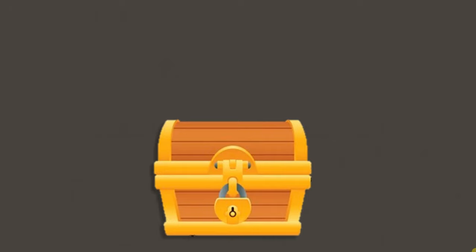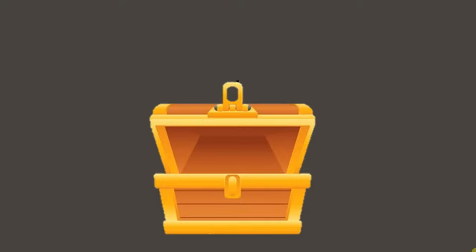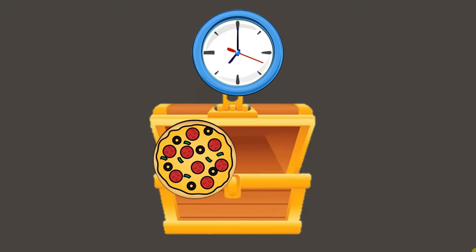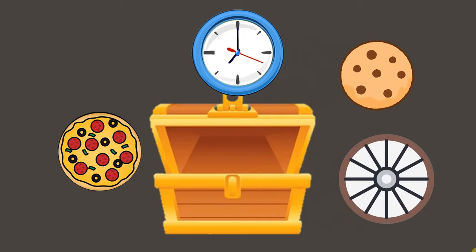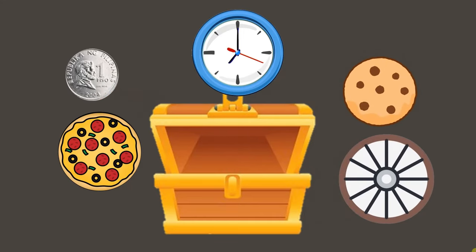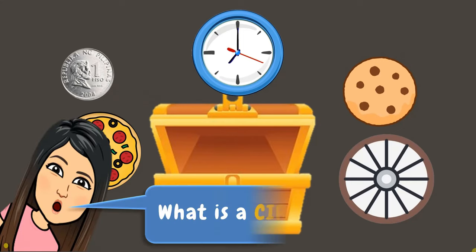We all know that we are surrounded by circular objects. It can be a clock, even a whole pizza, a wheel, a cookie, or a coin. But wait! Do you know what a circle is?